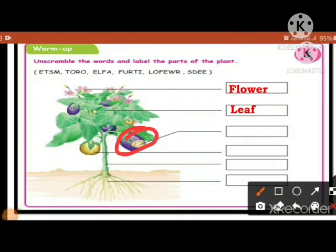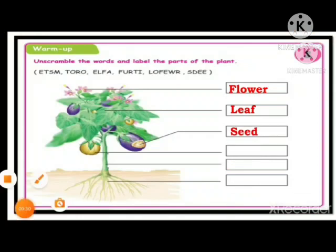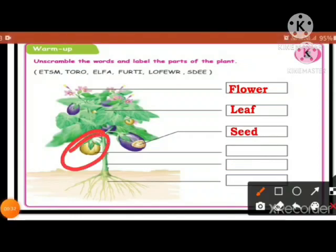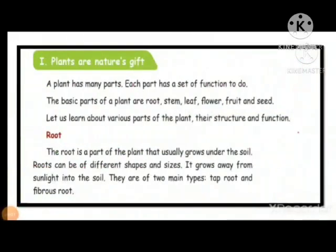Next one will be seeds — S-E-E-D. And then fruit — F-R-U-I-T. The middle one is the stem — S-T-E-M. And the last one is the root. Plants are nature's gift. A plant has many parts. Each part has a set of functions to do. The basic parts of a plant are roots, stem, leaf, flower, fruits, and seeds.